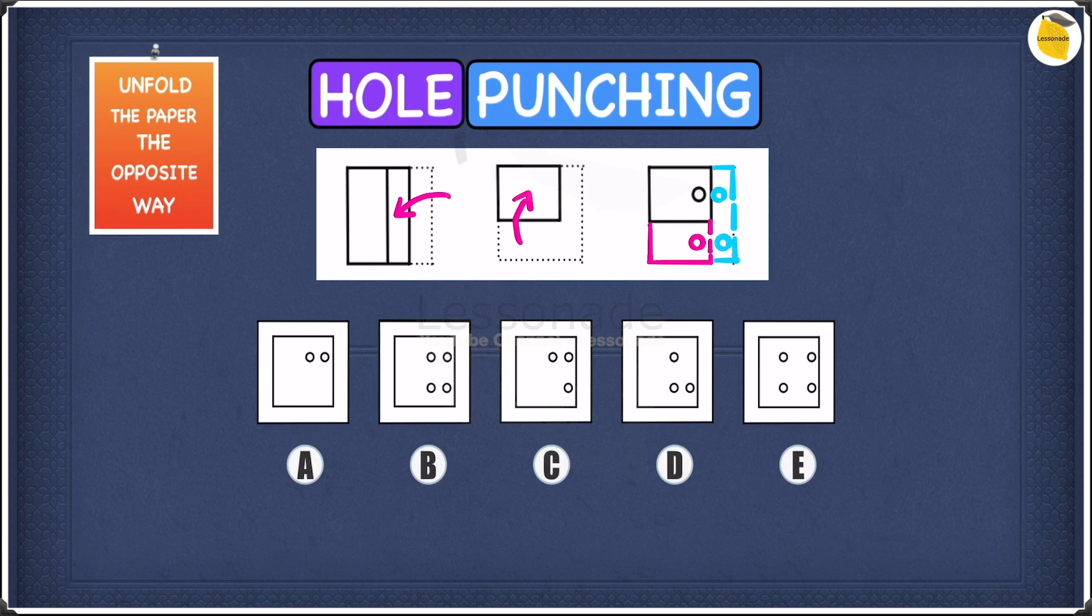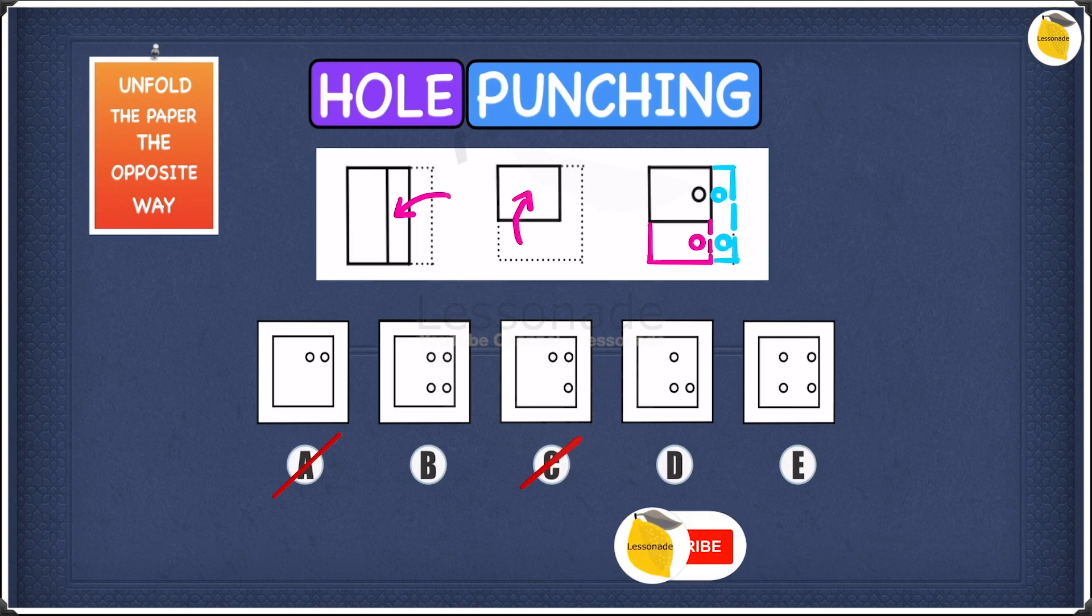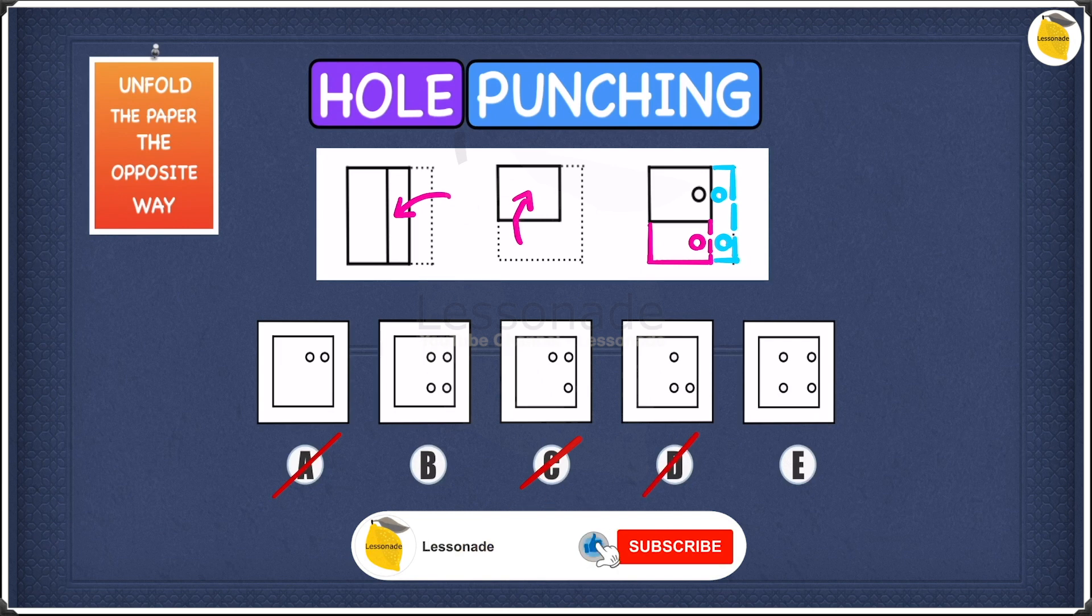So this means, as you guys could see, we have four holes. We have 1, 2, 3, and 4. Which means we can go ahead and cross off A, because in A you only have 2, cross off C, in C you only have 3, and cross off D, because in D you also only have 3. Now we're left with B and E.